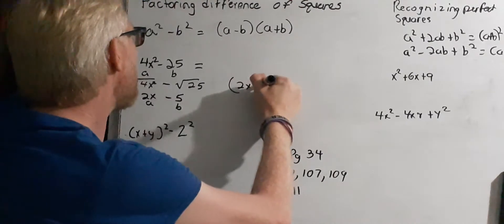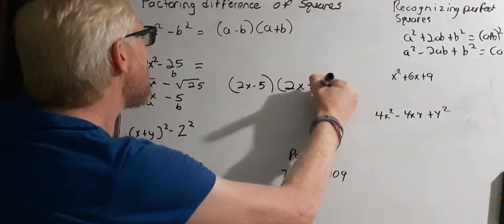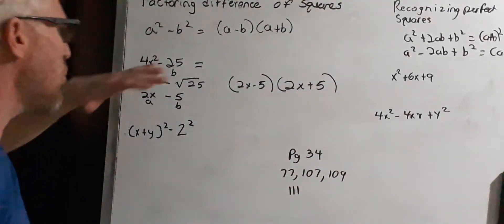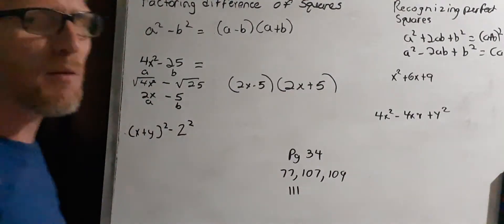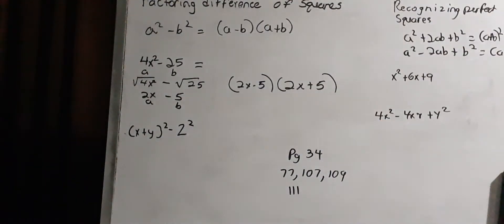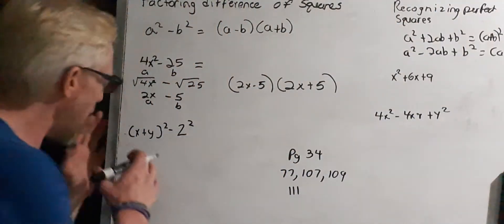That means our answer is 2x minus 5 times 2x plus 5. If you want to check your answer, multiply using FOIL — if you get back your original problem, it's correct.